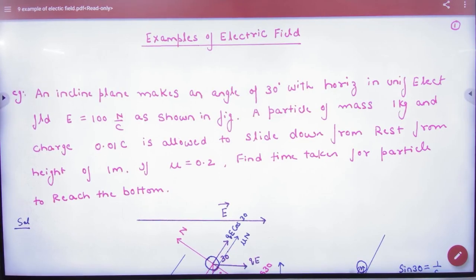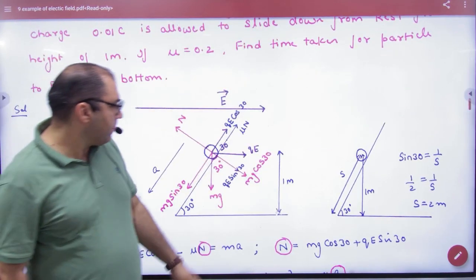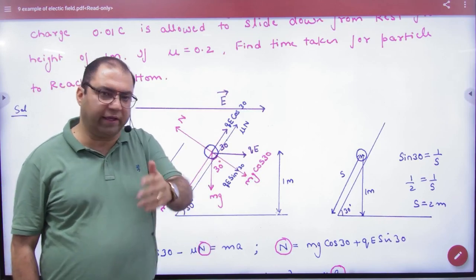An inclined plane makes an angle of 30 degrees with horizontal in uniform electric field E given. So if you have an inclined plane, it will be made at 30 degree angle. I am showing you.